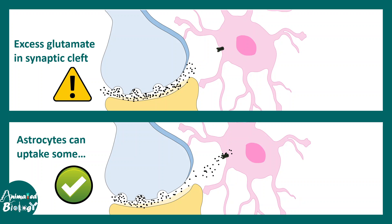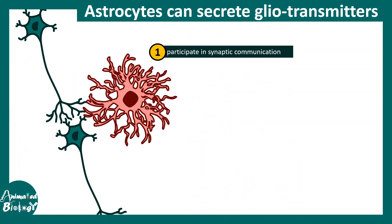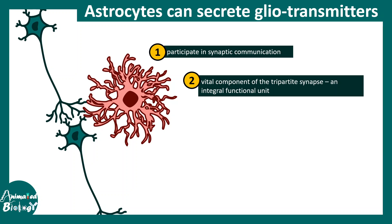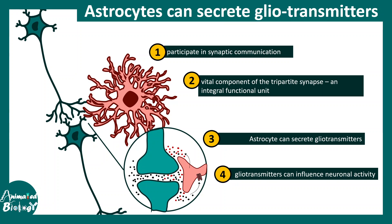Besides mopping up glutamate or helping in the glutamate biosynthesis pathway, astrocytes play a further important role in the brain. In the tripartite synapse, astrocytes can secrete specific molecules which help in neuronal communication — these molecules are known as gliotransmitters, shown here in red, while neurotransmitters are shown in black. These gliotransmitters are interpreted by the synapse via specific receptors, and thereby astrocytes can actually communicate with a functional synapse. If these tripartite synapses are perturbed, this can lead to many diseases including neurodegenerative disorders.